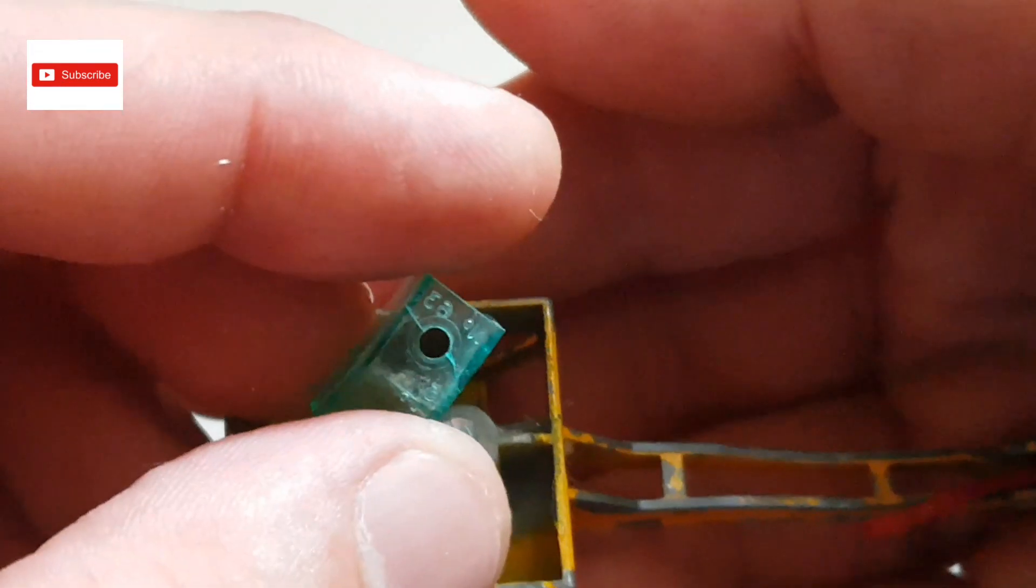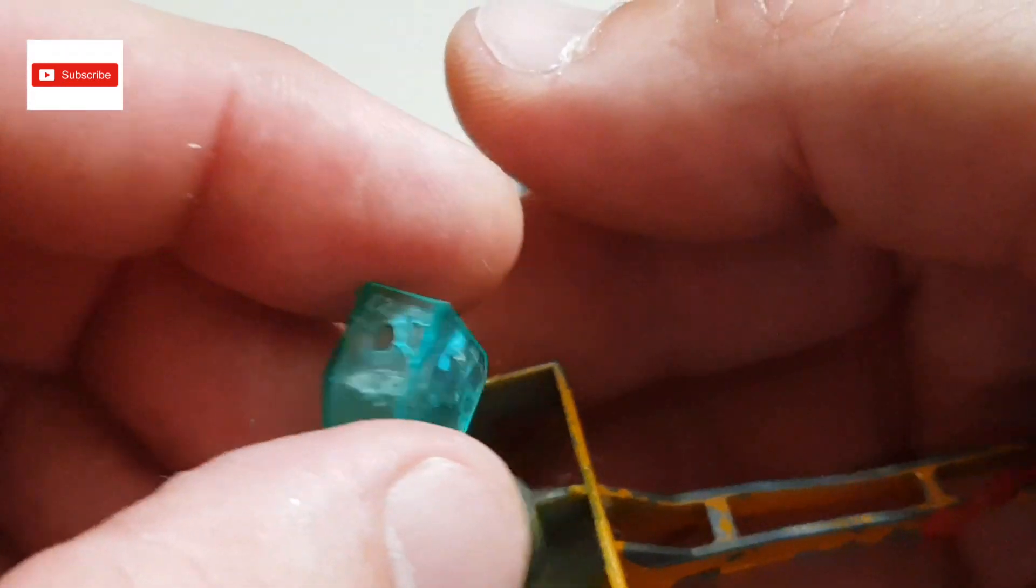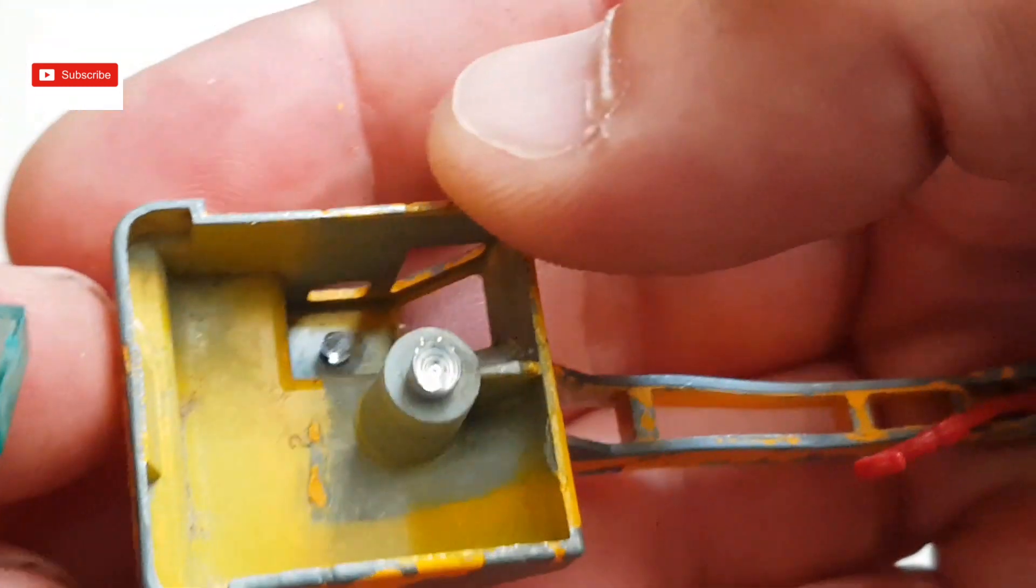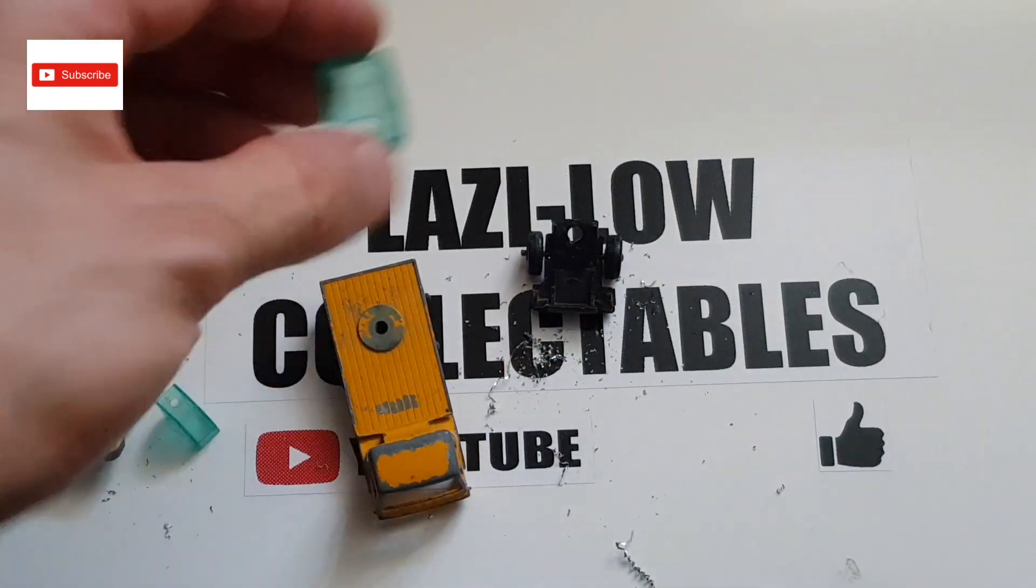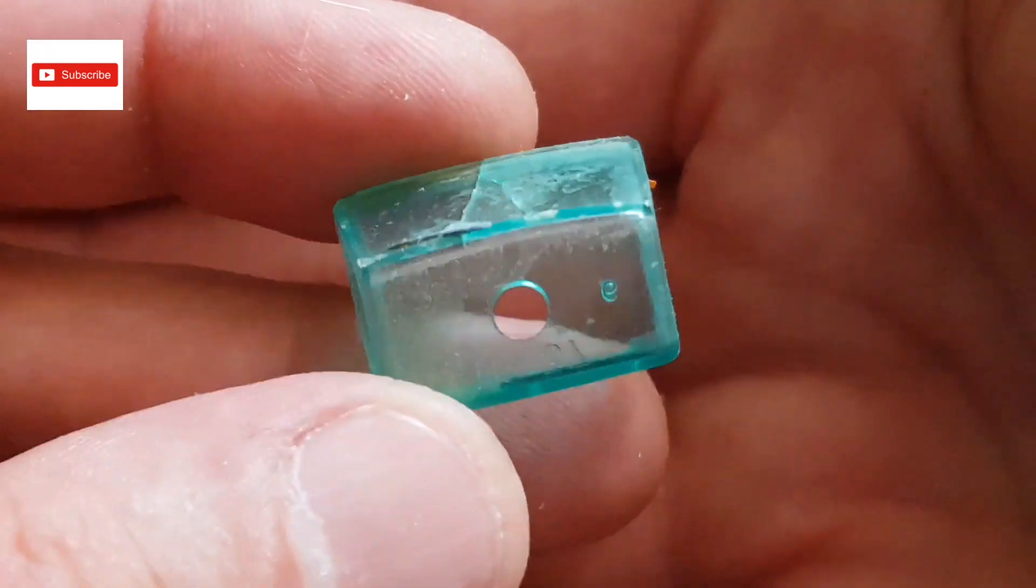So the small middle windscreen is out as well. That was riveted in, so I had to drill, and this is the front one.